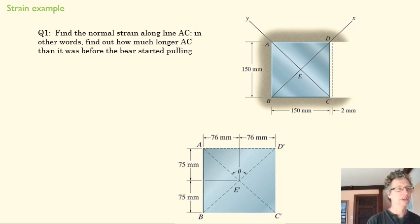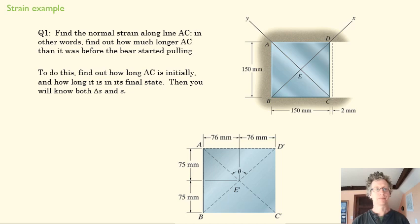Now you try this out. You want to find the normal strain along AC. You're going to do the exact same thing: find the original length, find its length after the change, and then use our strain equation. Go ahead and do that. I'll pause.